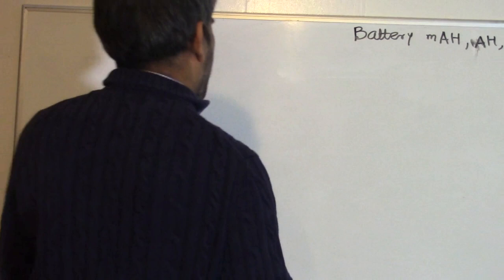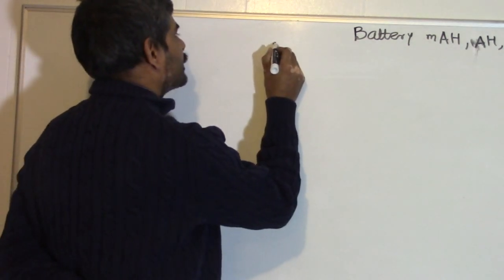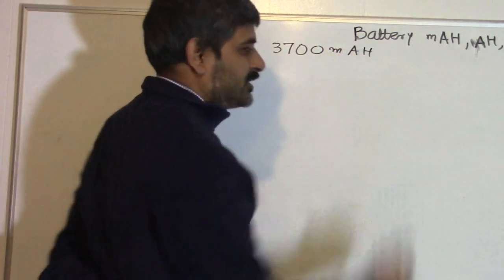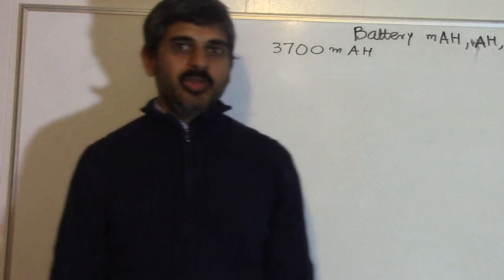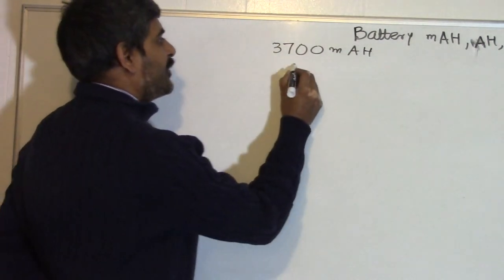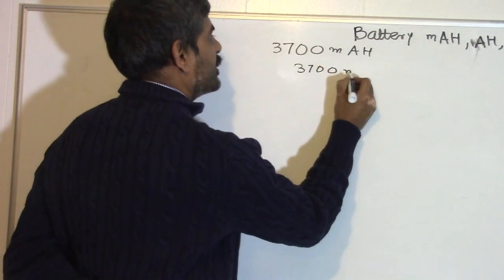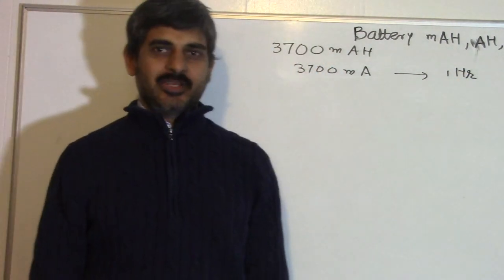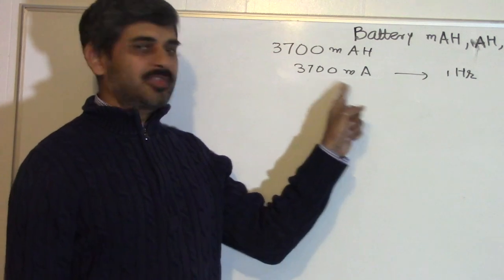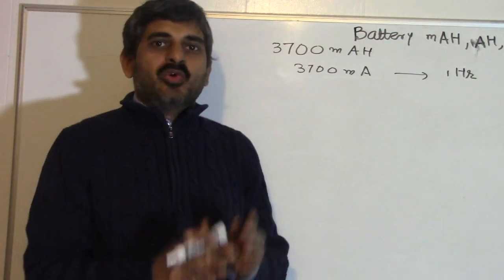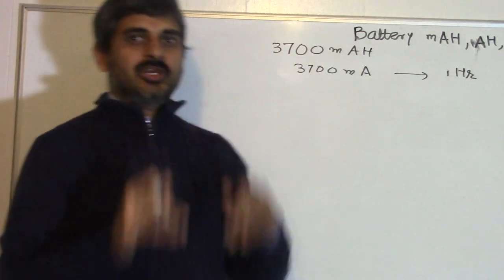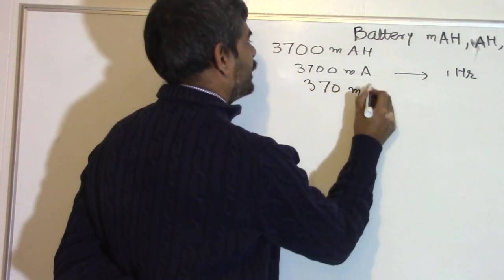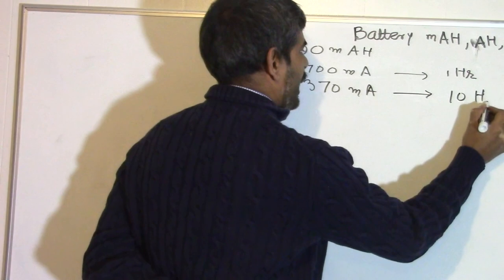Let us say a battery is rated at 3700 milliampere hour. What does that mean? It means that if we draw a current of 3700 milliampere, then it will last for one hour. The battery gets exhausted in one hour if you take a current of 3700 milliampere. So how do you increase the life of that battery? You reduce the current you take from the battery. So if you take 370 milliampere, then the battery is going to last for 10 hours.